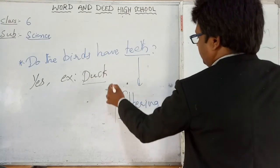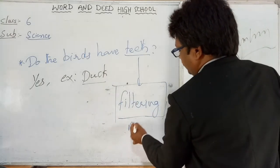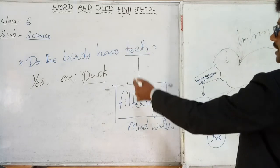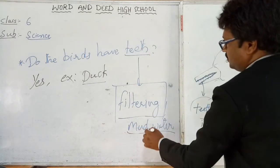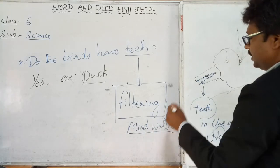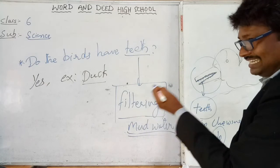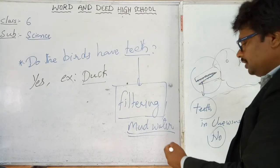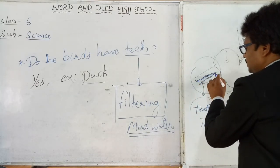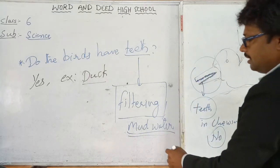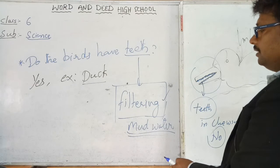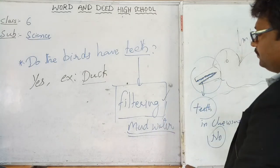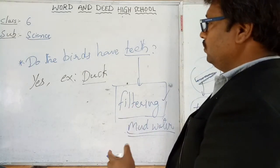The teeth of duck help in filtering. Ducks collect food in mud water — you might have seen them doing this. In the process of collecting food, a duck dips into the mud water and sucks the water into its mouth. The teeth present on its beak help in filtering that water, separating food from mud. This is how ducks get their food.